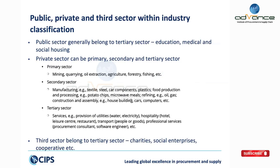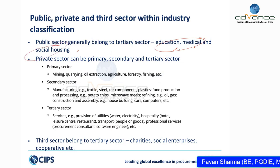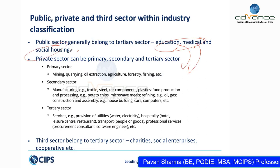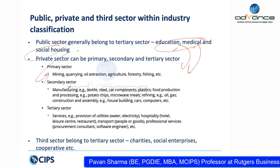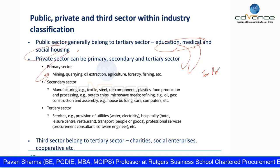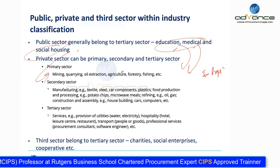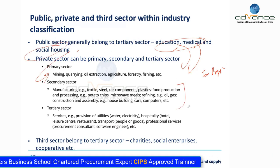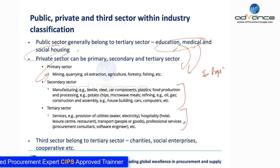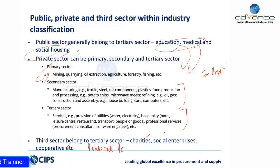Examples of public sector services include education, medical, housing, and social housing. When the private sector does education, medical, or housing, their objective is to make money — profit. Primary sector examples include mining, quarrying, oil extraction, and agriculture. Third sector examples include social enterprises, charities, cooperatives, and political parties. The tertiary sector includes services — they don't manufacture anything.